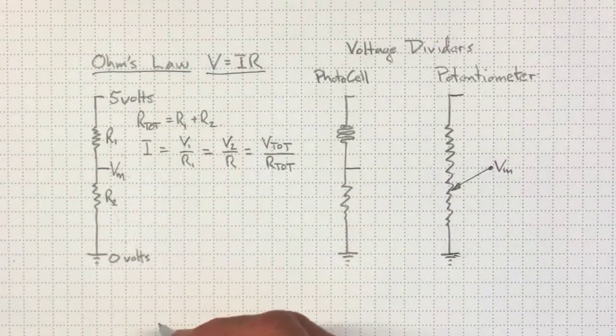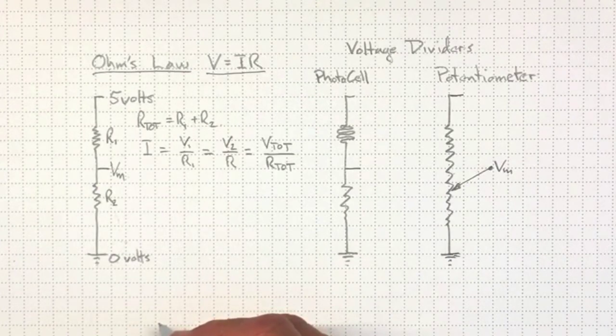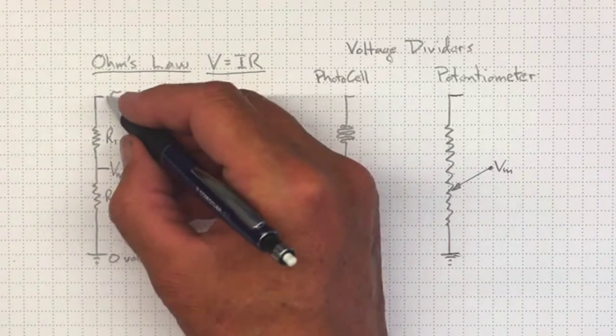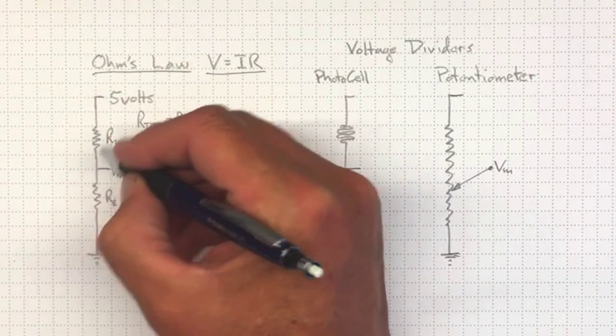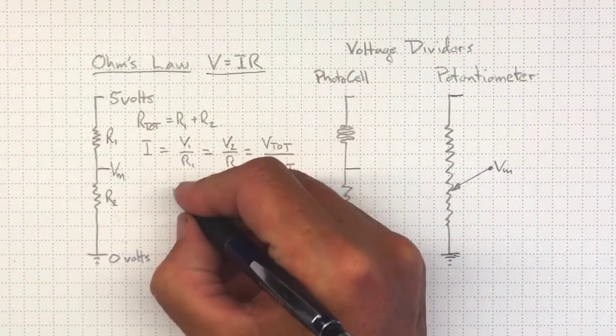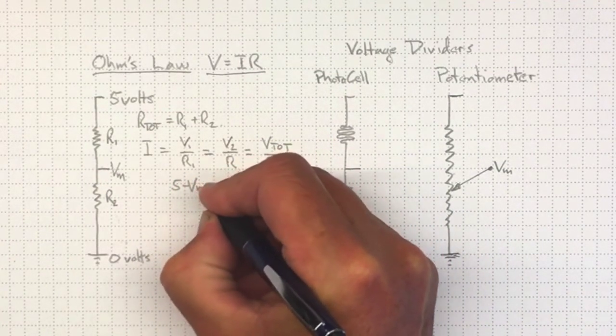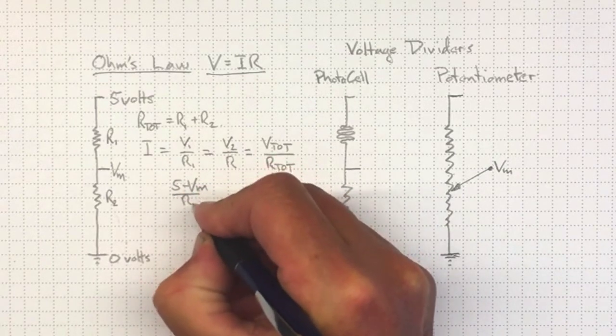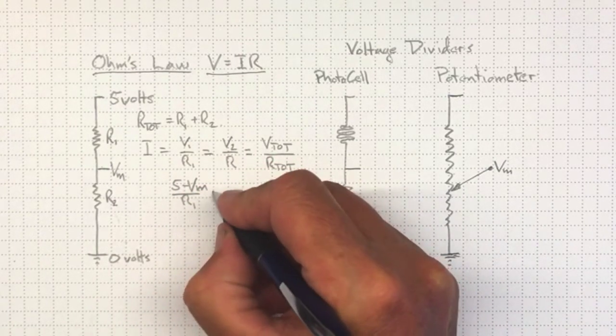So if we look at that, we're going to wind up with V1, well that's the voltage drop from here to here, that's five minus VM. Five minus VM divided by R1 equal to...